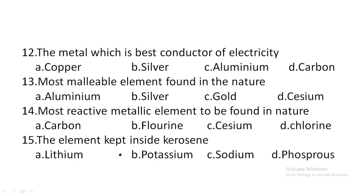Next one: the metal which is the best conductor of electricity — option A: copper, option B: silver, option C: aluminium, option D: carbon. The best conductor of electricity is silver. The second best conductor of electricity is copper. So the best conductor of electricity is silver. Hence option B is the correct answer.